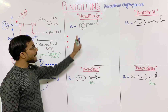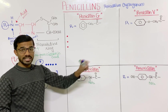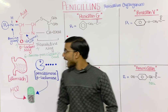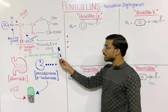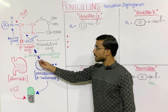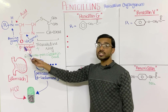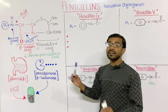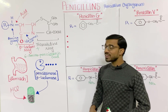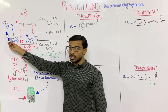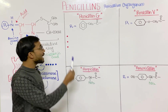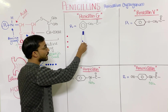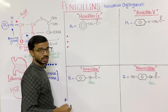The difference between penicillin G and penicillin V lies at the R side. The core structure — thiazolidine ring, beta-lactam ring, and amino group, collectively called 6-aminopenicillanic acid — remains the same. In penicillin G, you will see a benzyl ring with a carbonyl functional group at the R side.